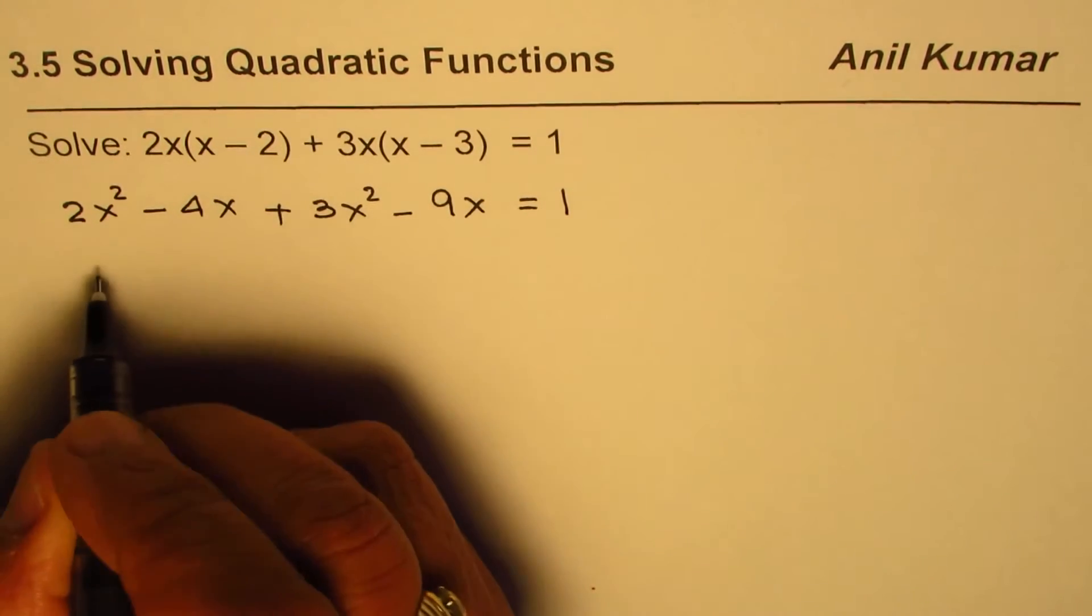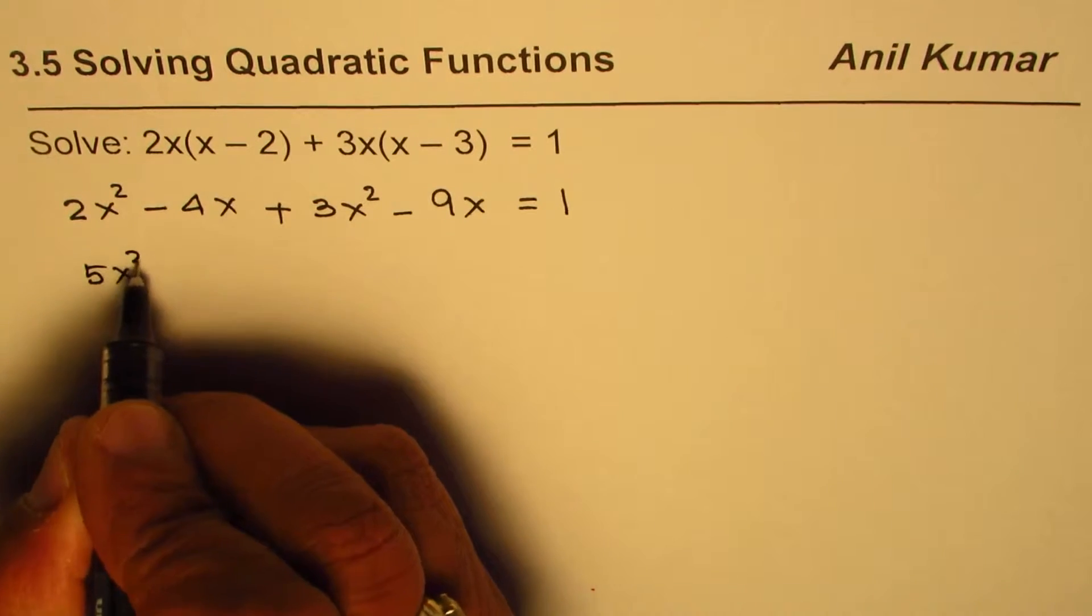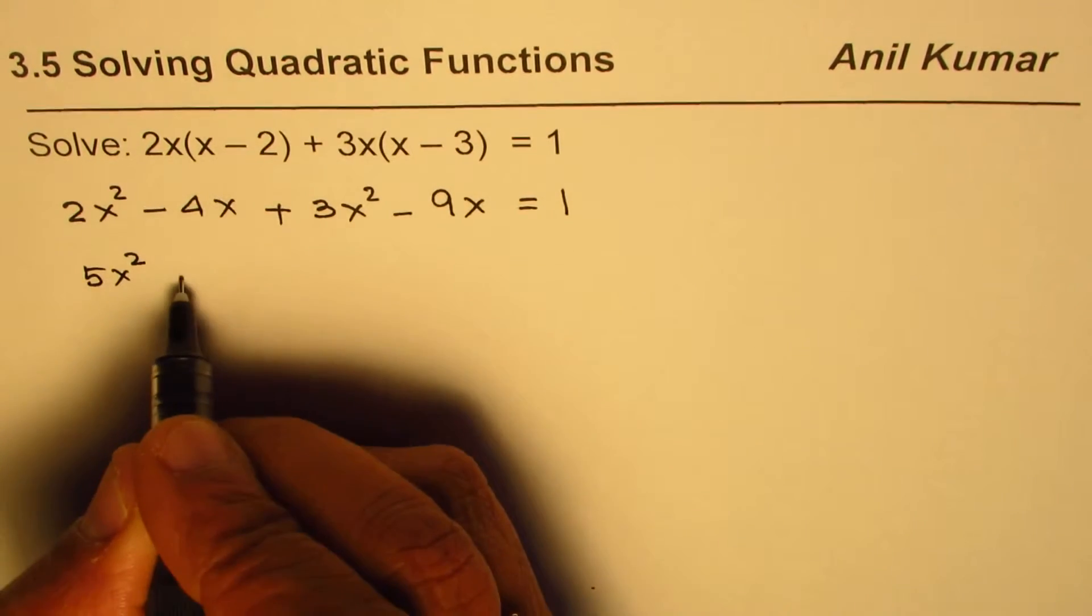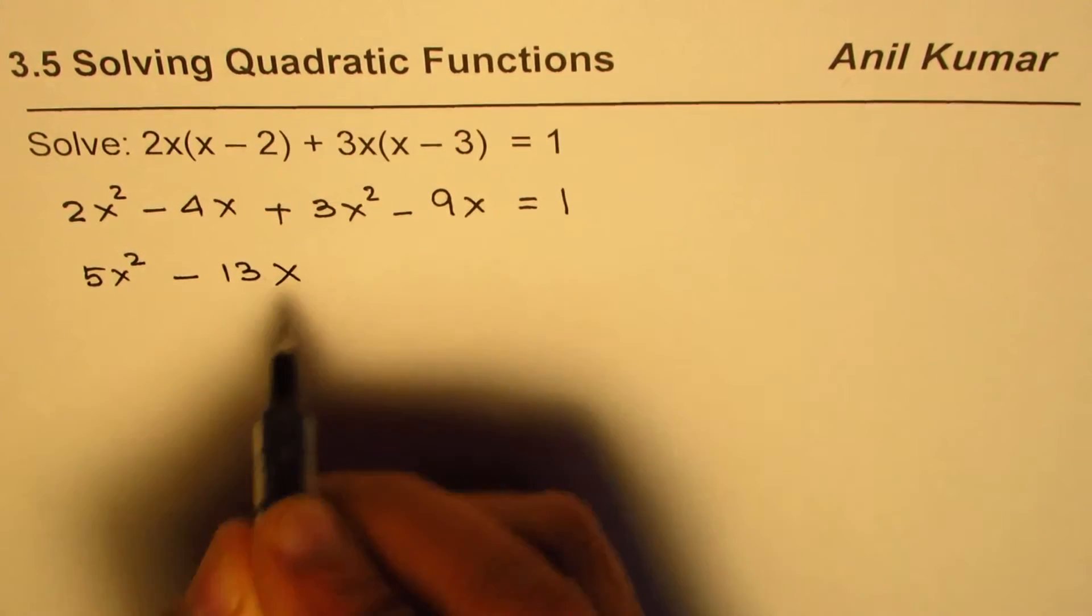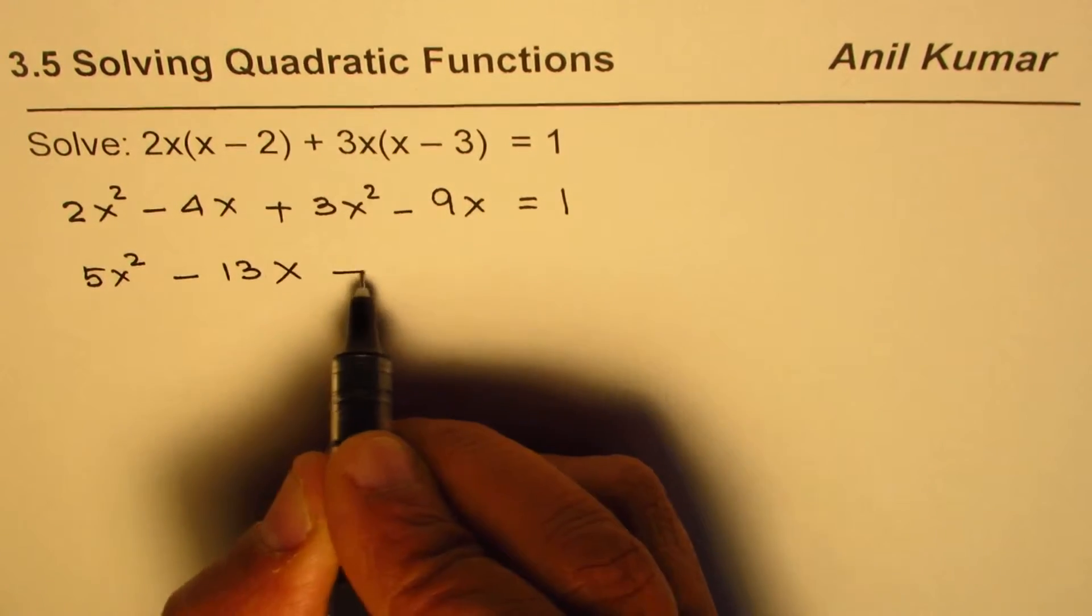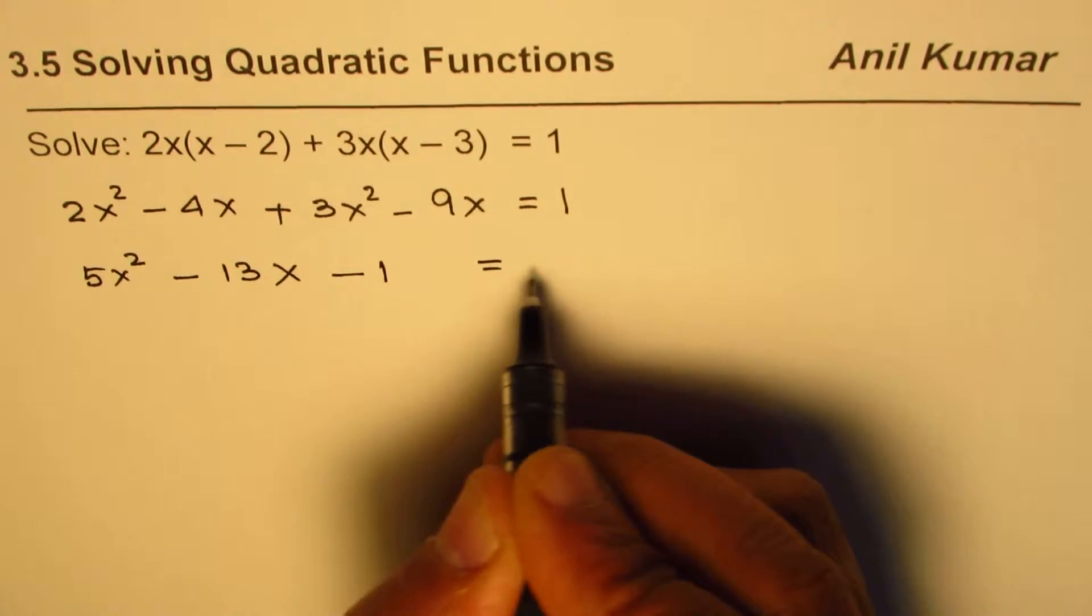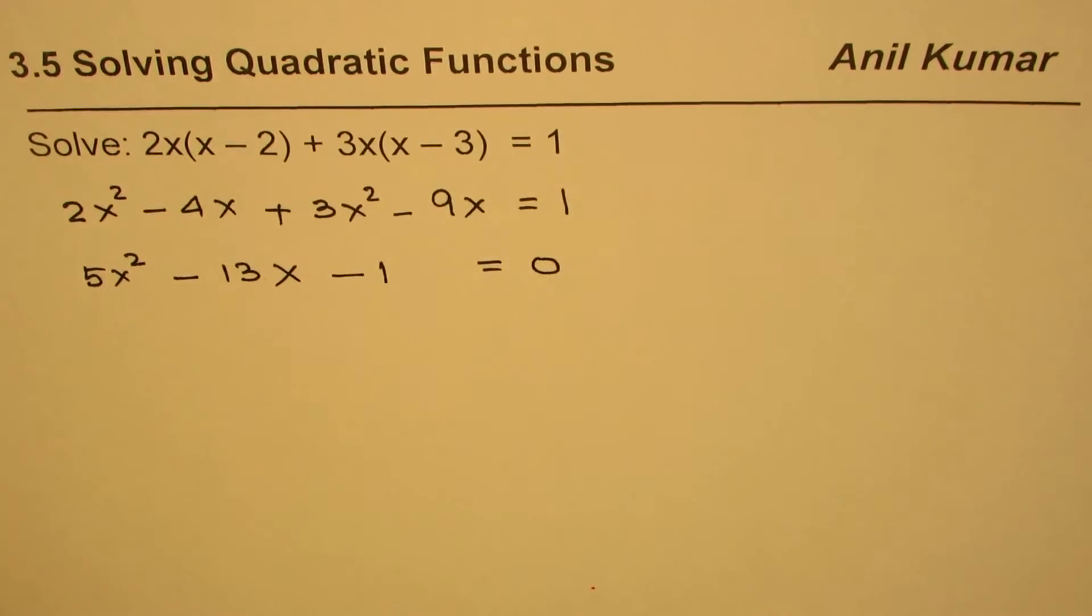2x squared plus 3x squared is 5x squared. Minus 4x minus 9x is minus 13x. And then we have 1, which we can bring on the left side, so minus 1 equals 0. So that is the equation which we have.